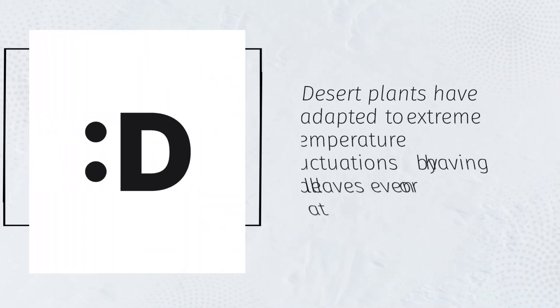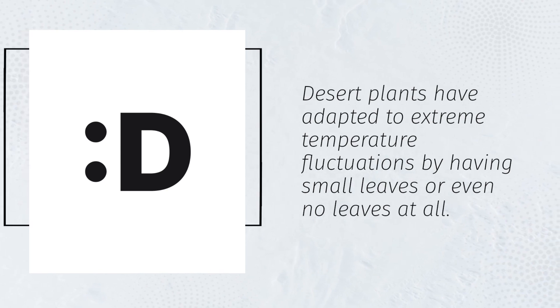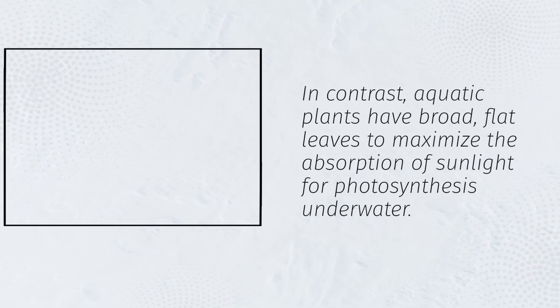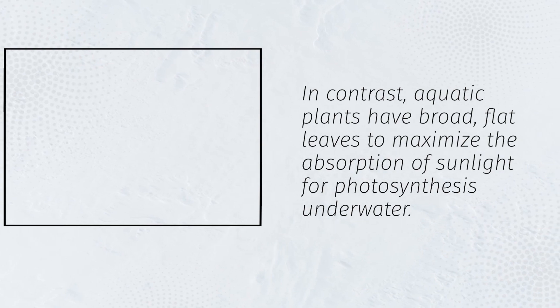Desert plants have adapted to extreme temperature fluctuations by having small leaves or even no leaves at all. In contrast, aquatic plants have broad, flat leaves to maximize the absorption of sunlight for photosynthesis underwater.